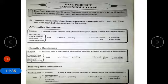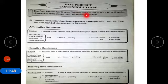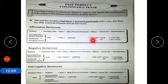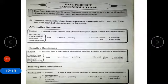Now coming to past perfect continuous tense. The past perfect continuous tense is used to talk about the continuation of an action in the distant past before another action. We use the auxiliary 'had been' plus present participle with all subjects. Affirmative: 'I had been painting the wall since morning.' Negative: 'I had not been painting the wall since morning.' Interrogative: 'Had I been painting the wall since morning?'